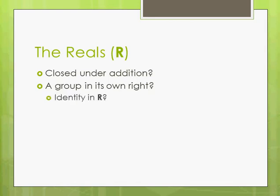They have an identity, which is zero. You add zero to any real number and you get that number — for instance, three plus zero is three. Each element also has an inverse; for three, it would be negative three, because those are the two numbers you add together to get the identity.